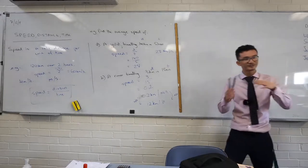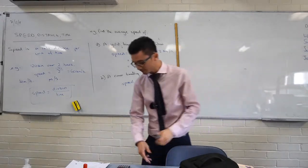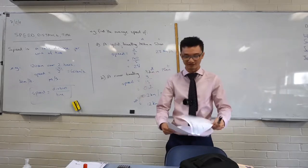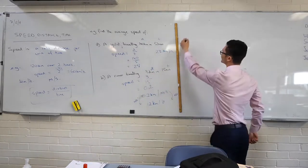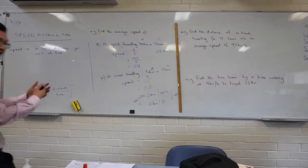So far this has been kind of similar stuff to what we've been doing, but let's see what happens now when we get given different pieces of information. How can we work out the rest of it? Speed, distance, and time.